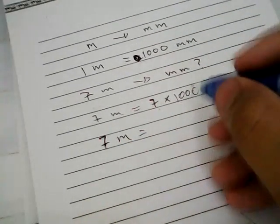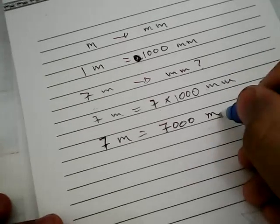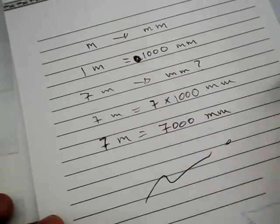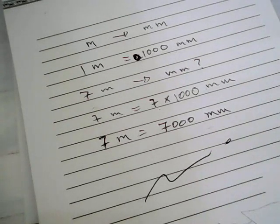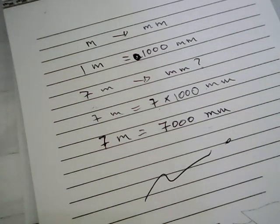So 7 meter is equal to 7000 millimeter. Well, that's it, that's the result of our equation problem. Thank you for watching and I'll see you in another conversion video tutorial. Goodbye.